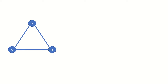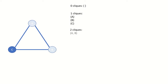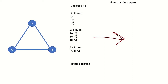Now that we have defined the simplex operation, we can find the simplex of this graph. Let's list out all the cliques: we have one zero-clique, three one-cliques — A, B, and C — three two-cliques: A, B; A, C; and B, C. And finally, we have one three-clique, A, B, C. That's a total of eight cliques, so the simplex graph will have eight vertices.